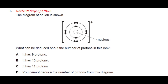The last question shows a diagram of an ion with a plus 1 charge, having 2 electrons in the first shell and 8 in the second shell — that is 10 electrons. Since it lost 1 electron to form the ion, the neutral atom must have had 11 electrons. Because a neutral atom has equal protons and electrons, this ion must have 11 protons. The question asks what can be deduced about the number of protons — the answer is C.